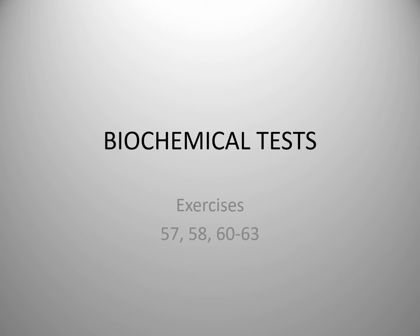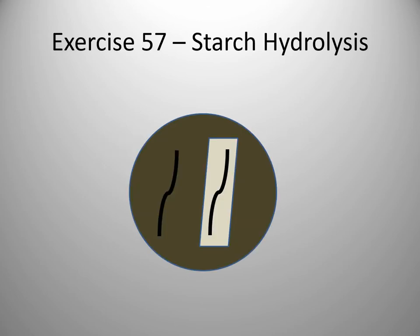These are explanations for the biochemical tests. These tests are really important for helping you with identification of your unknown later in the semester. This will include exercises 57, 58, 60 through 63, as well as an additional test at the end. These are all in your lab manual. So for exercise 57,